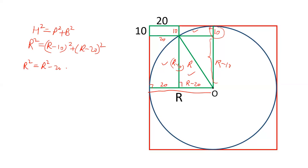R squared minus 20R plus 100 plus R squared minus 40R plus 400. R squared cancels out, so we are getting negative 60R plus 500 equals zero.